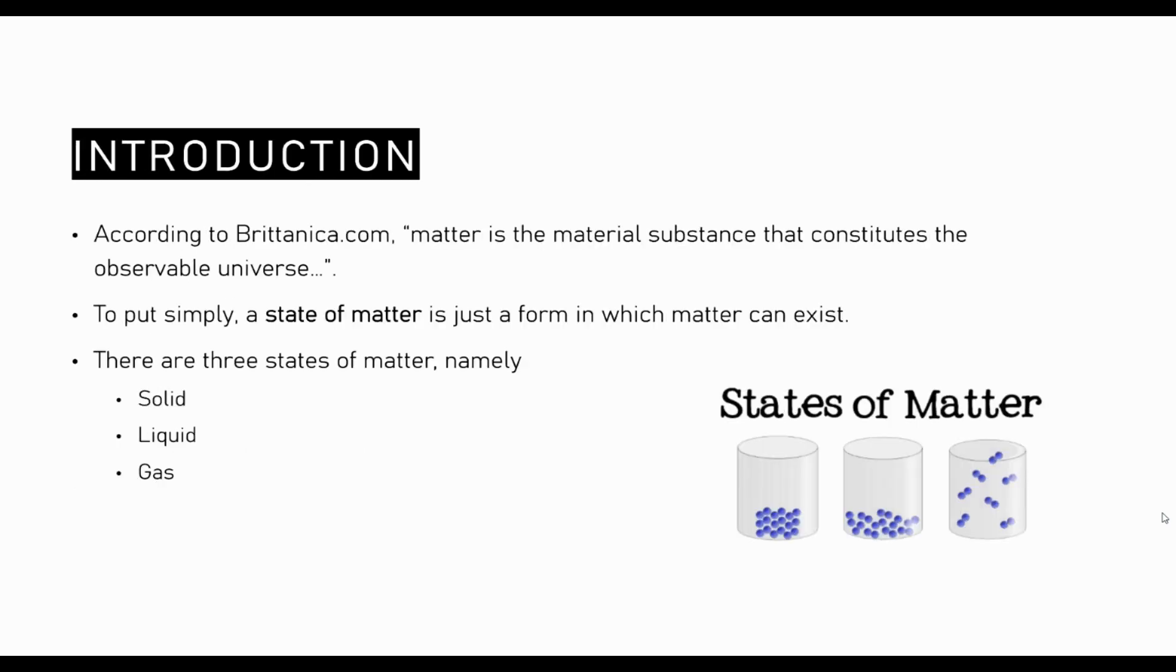To understand what the states of matter are, we must first understand what is matter. According to Britannica.com, matter is the material substance that constitutes the observable universe. Matter can also be defined as any material that has mass and takes up space by having volume. Therefore, a state of matter is one of the distinct forms in which matter can exist.